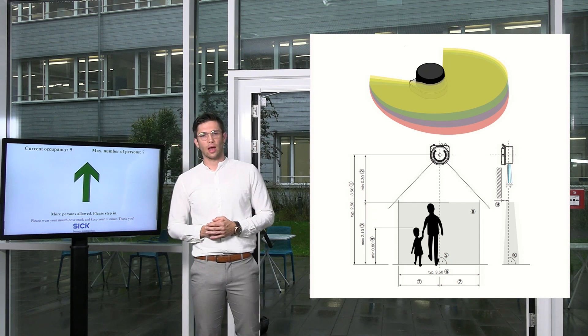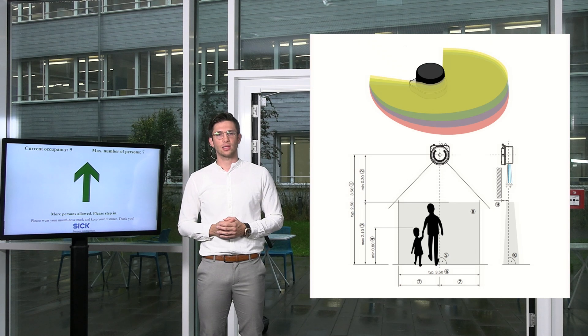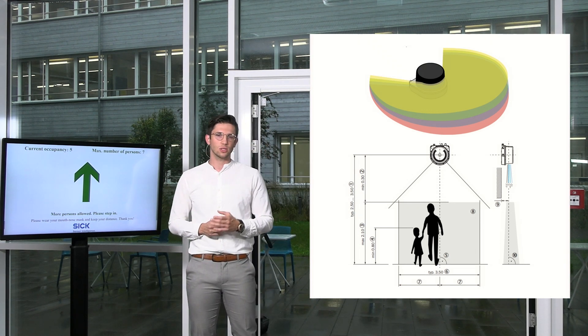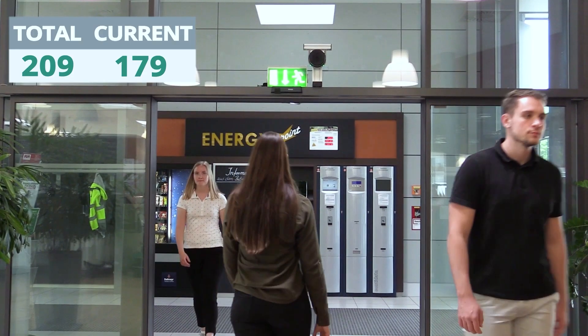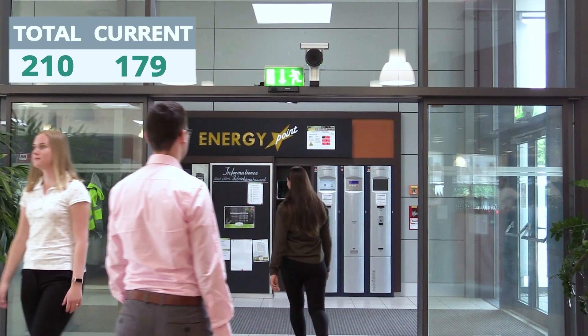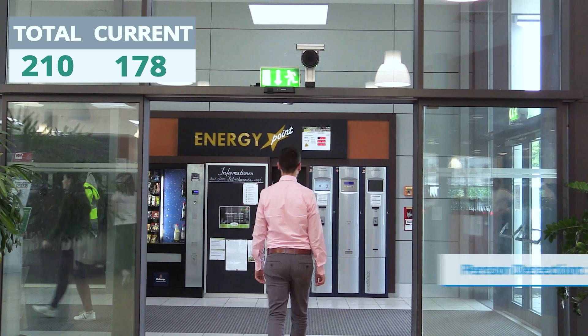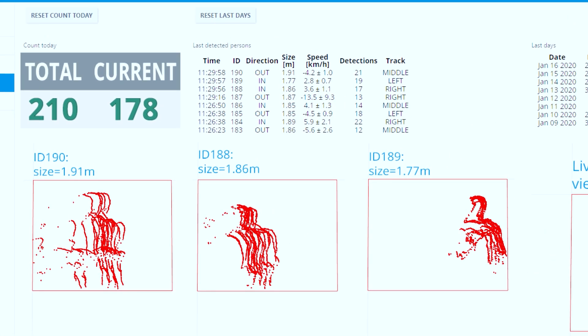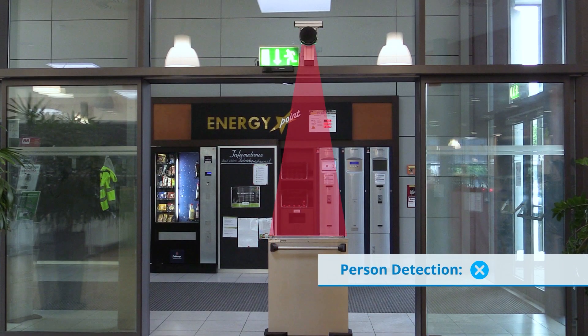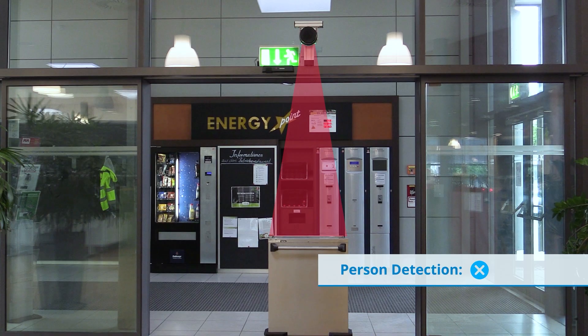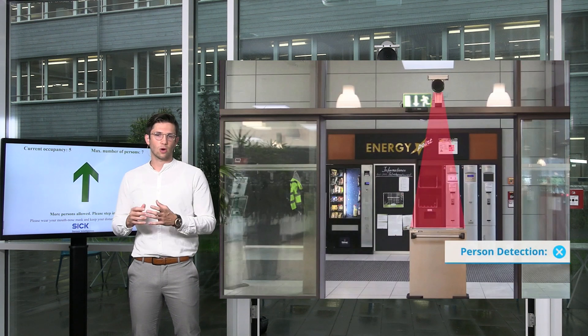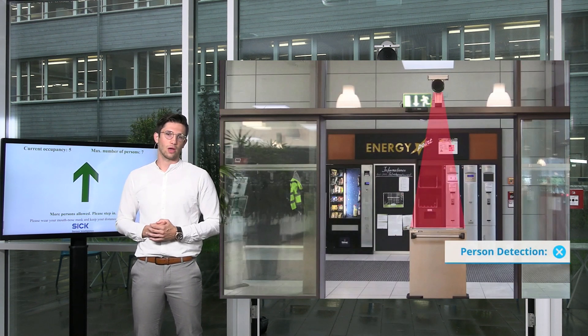And based on the LiDAR technology we only collect 3D point clouds. So we protect the privacy rules. And in this video you will see that we are only collecting a combination of shoulder, head, shoulder. And this is based on a machine learning algorithm, taught by over 1000 people. And you can see we can differentiate persons from objects. So objects will never disrupt the counting accuracy.